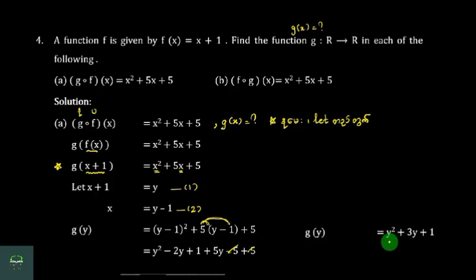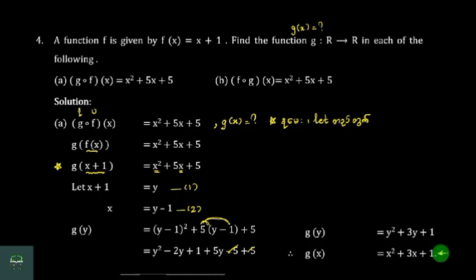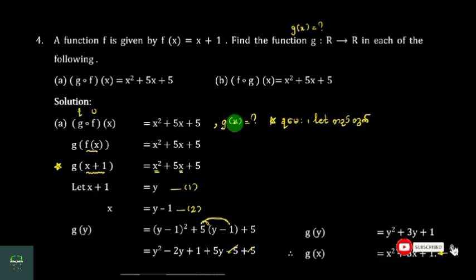If you have g of s plus 1, then the formula will be s squared plus 3s plus 1. So, if you have two functions of g of s plus 2, then you will have two functions of g of s plus 2.